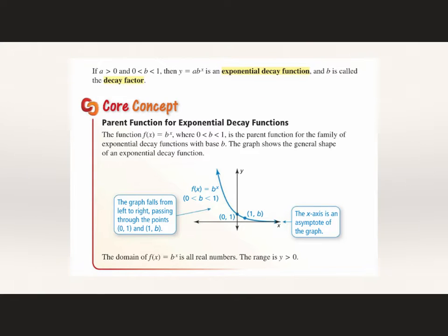Here is our exponential decay function. When b is in between 0 and 1 — so it's going to be some type of decimal less than 1 or a fraction — anything in between 0 and 1 gives us exponential decay. Going from left to right, our graph is decreasing. We have our asymptote at 0 for our parent function, and our domain is still all real numbers. Our range is greater than 0 — same as exponential growth. The only difference is this one falls as x values get bigger.